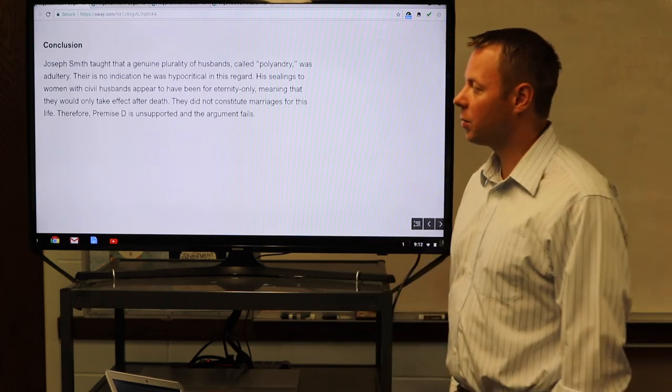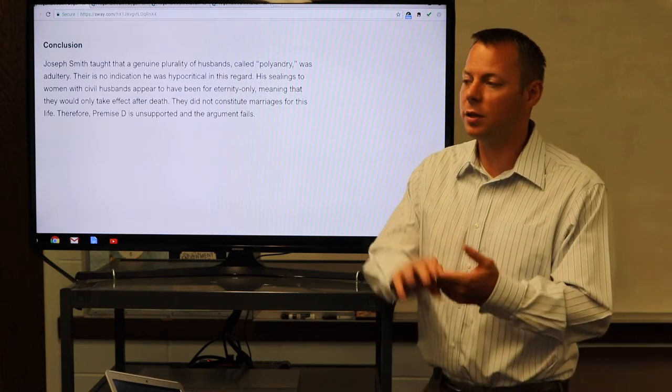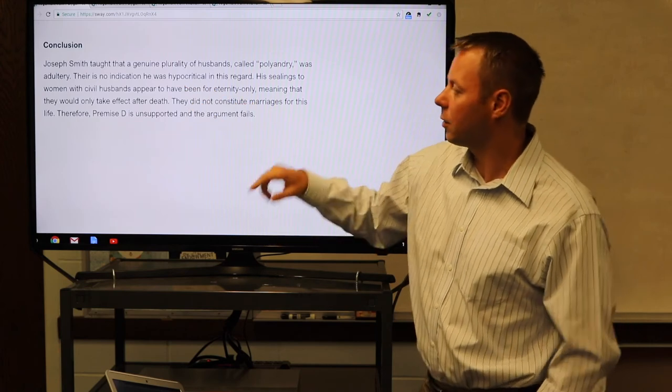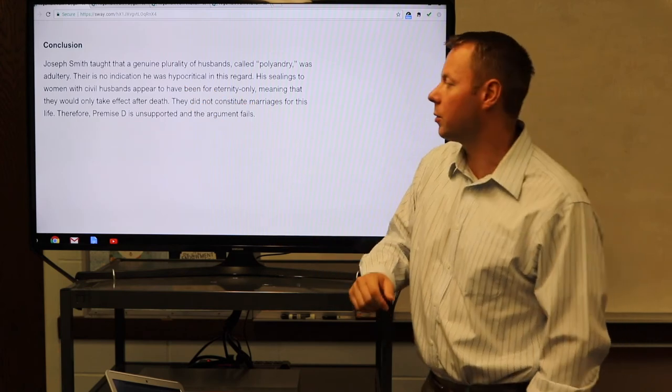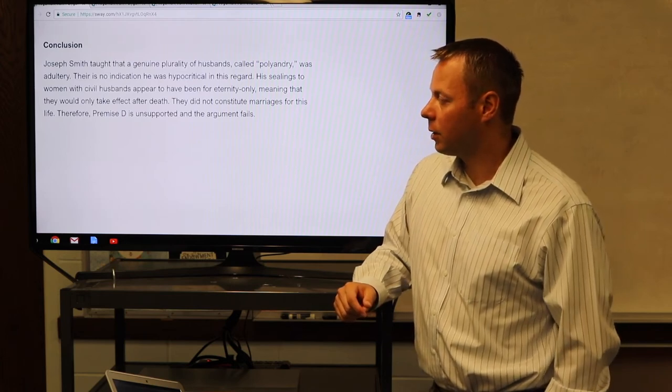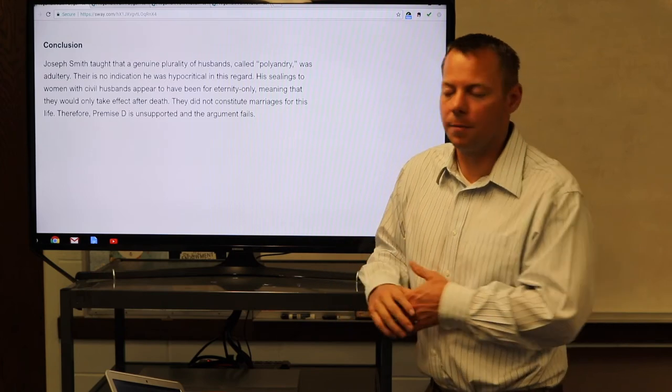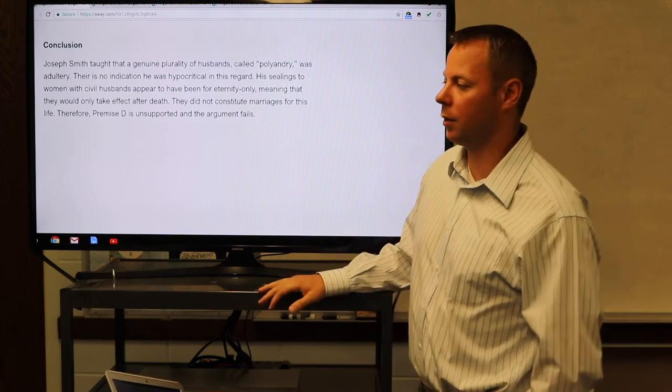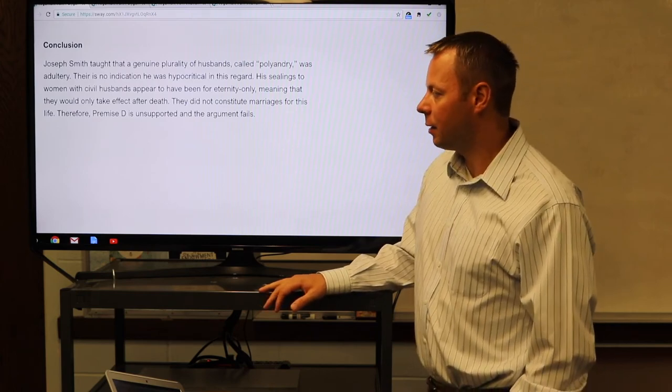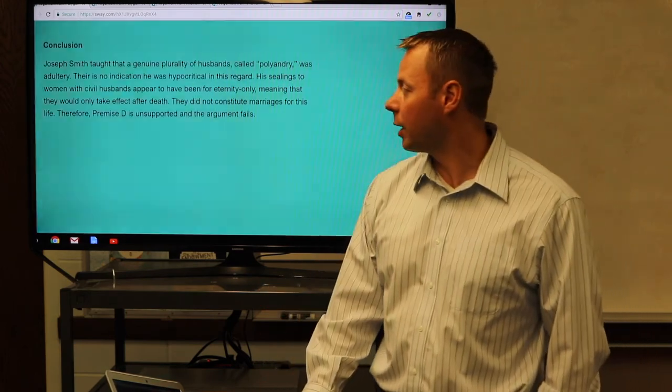What's the conclusion? Joseph Smith taught that a genuine plurality of husbands called polyandry was adultery. He taught that in revelations, he taught to all polygamy insiders. There is no indication that he was hypocritical in this regard. His sealings to women with civil husbands appear to have been eternity-only, meaning that they would only take effect after death, and in some cases, maybe even not that. They did not constitute marriages for this life. Therefore, premise D is unsupported, and the argument fails.